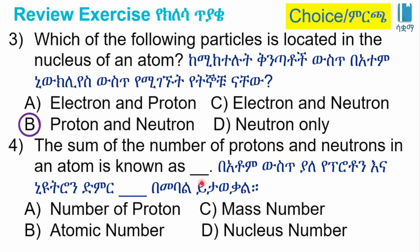The sum of the number of protons and neutrons in an atom is known as: A: number of protons. B: atomic number. C: mass number. D: nucleus number. The answer is C, mass number.